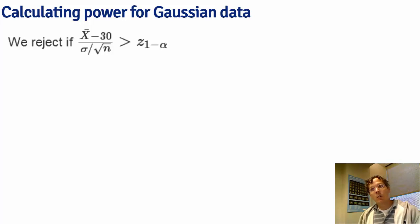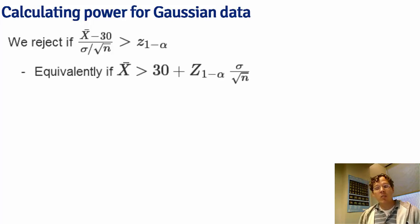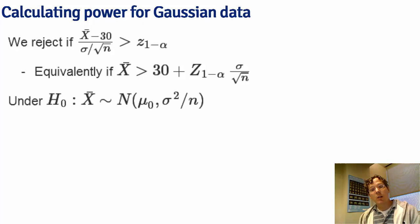Then we will reject if our z-statistic, x-bar minus 30 over its standard error, is bigger than z1 minus alpha. This is the same as saying we're going to reject if x-bar is bigger than 30 plus this z quantile times the standard error of the mean.